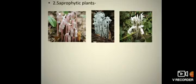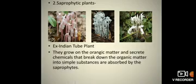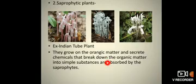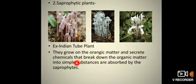The second type of plant is the saprophytic plant. Here you can see three pictures of the Indian tube plant. These plants grow on organic matter and secrete chemicals that break down the organic matter into simpler substances, which are then absorbed by the saprophytes. So these plants secrete chemicals that break down dead and decaying matter into simple substances, and then absorb those simple substances for nutrition and growth.